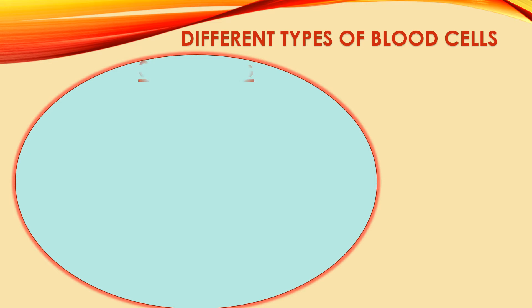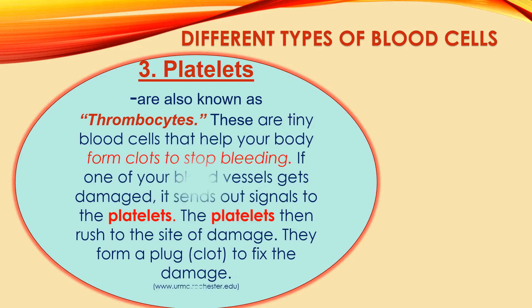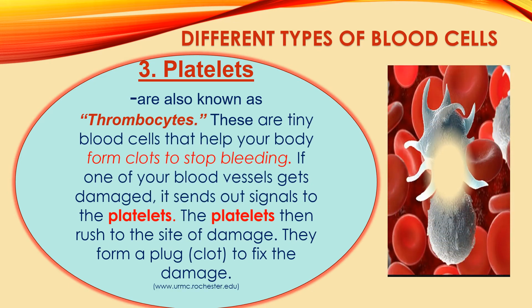Number three is platelets. Platelets are tiny blood cells that help your body form clots to stop bleeding. If one of your blood vessels gets damaged, it sends out signals to the platelets. The platelets then rush to the site of damage and form a plug or clot to fix the damage.